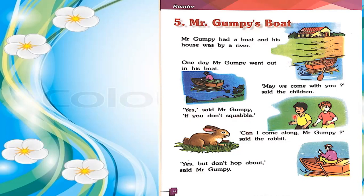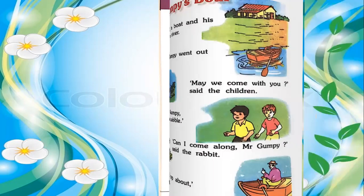Then they are traveling together. Can I come along, Mr. Gumpy? Said the rabbit. They met one rabbit and the rabbit is asking, can I come along, Mr. Gumpy? Mr. Gumpy said yes, but don't hop about. Okay, you can come with me, but don't hop about. What does hop mean? Hop means jump. Mr. Gumpy said, don't jump, to the rabbit.